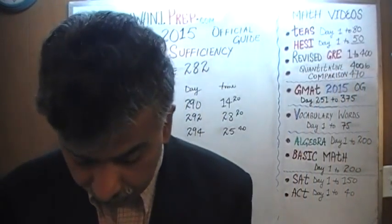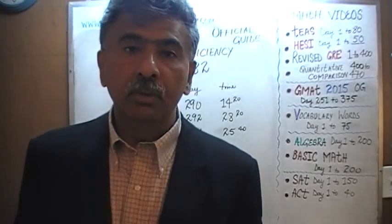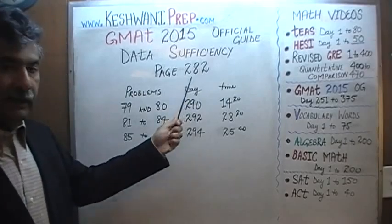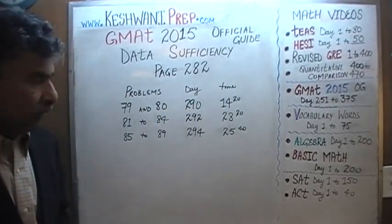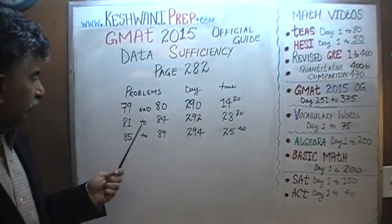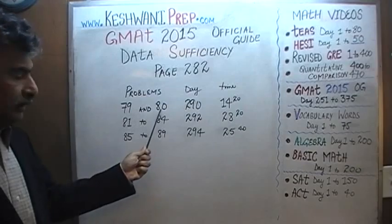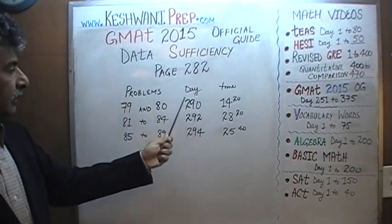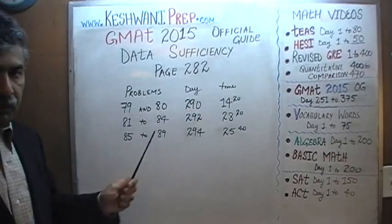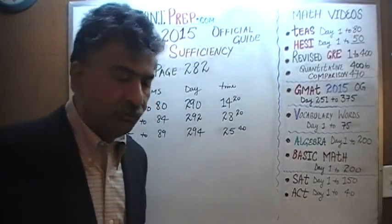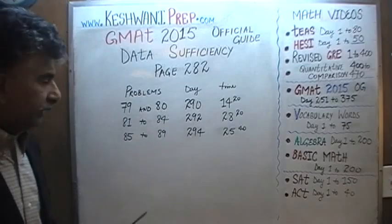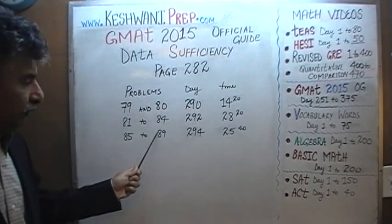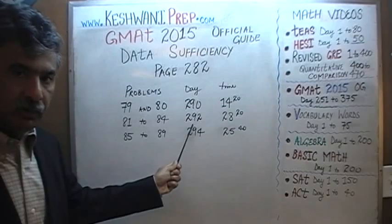Today we are going to look at all the data sufficiency problems appearing on page 282. On page 282, you will find the solutions to problems 79 and 80 on day number 290. Just type in GMAT math day 290 and the video will pop right up. Problems 81, 82, 83, and 84 were solved on day number 292.